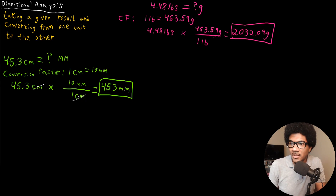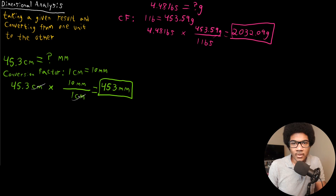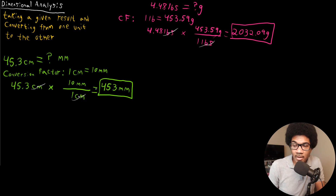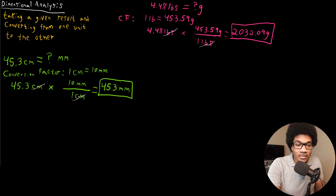The pounds in the numerator cancels out with the pounds in the denominator, and you're left with just grams as a result. You end up with these units canceling out if you treat them like you would treat algebra.